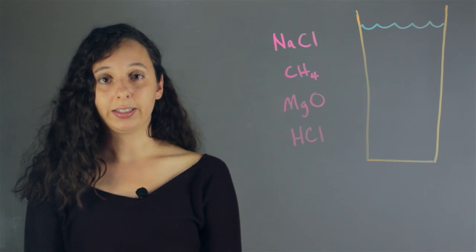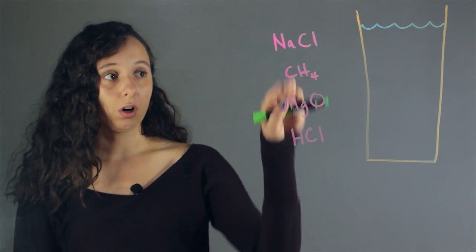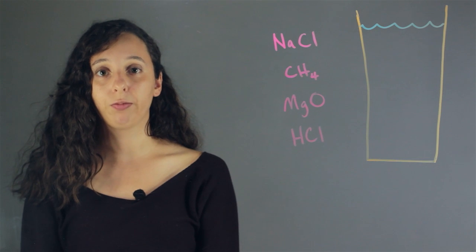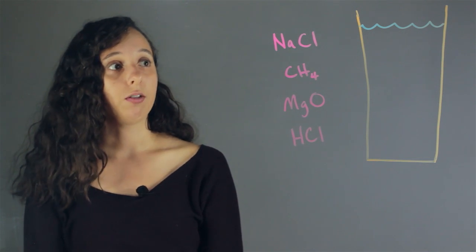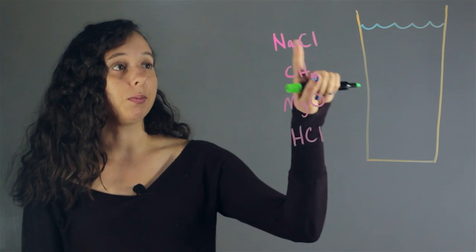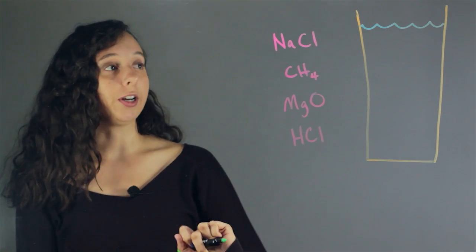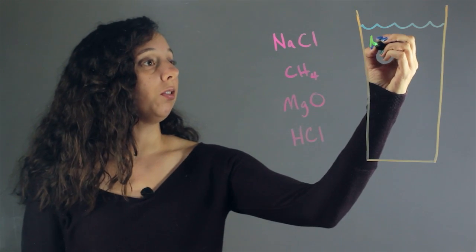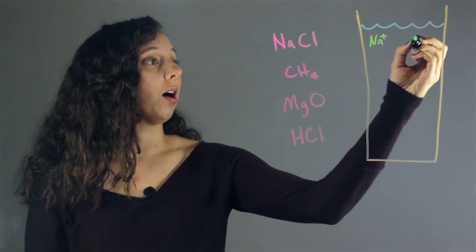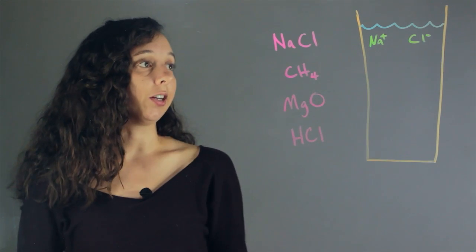So let's take a look and see which of these four compounds would dissociate and which of them are ionic. So first, we have sodium chloride, otherwise known as salt. And when you put this into solution, our cup of water here, this fully dissociates into positive sodium and negative chlorine.